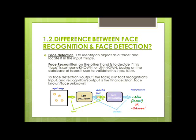Face detection answers the question: is that object a face? Face recognition, on the other hand, asks: whose face is it? Looking at an example image with faces in it — it is given as input to face detection, which detects faces and outputs a detected face. That output becomes the input for face recognition, which performs recognition against a database and gives a final decision — for example, identifying the person as Adam, or marking them as unknown.